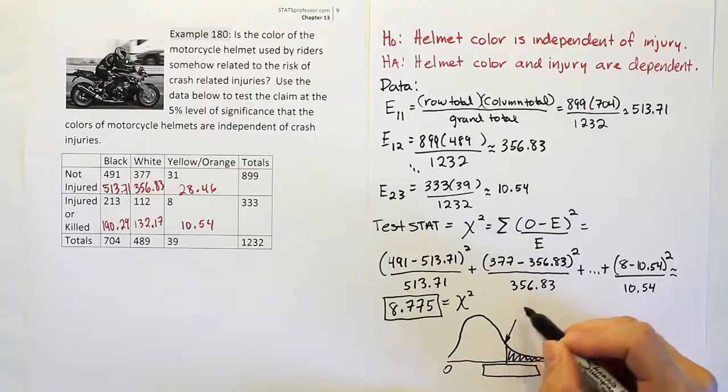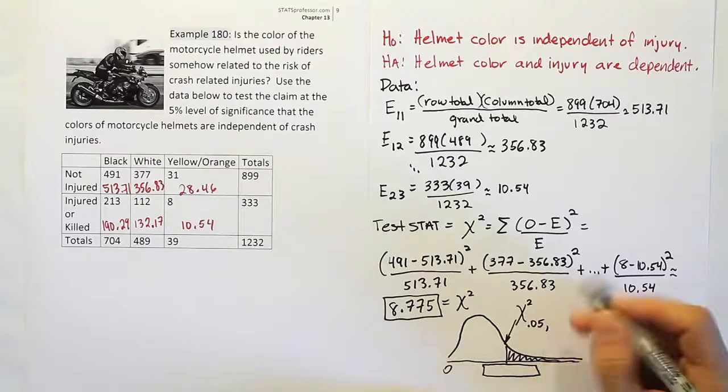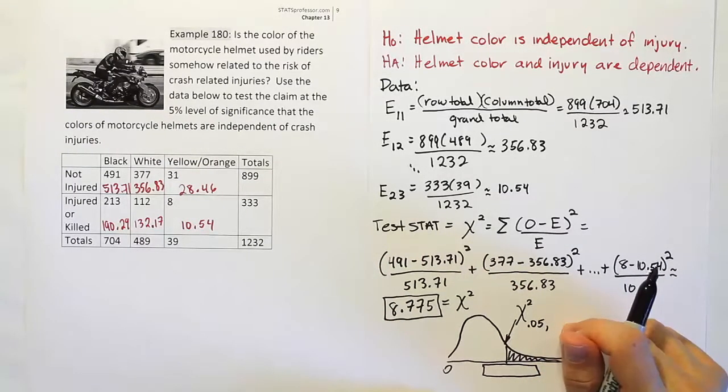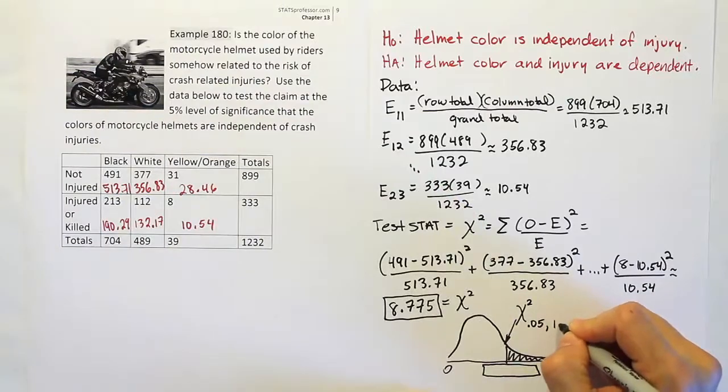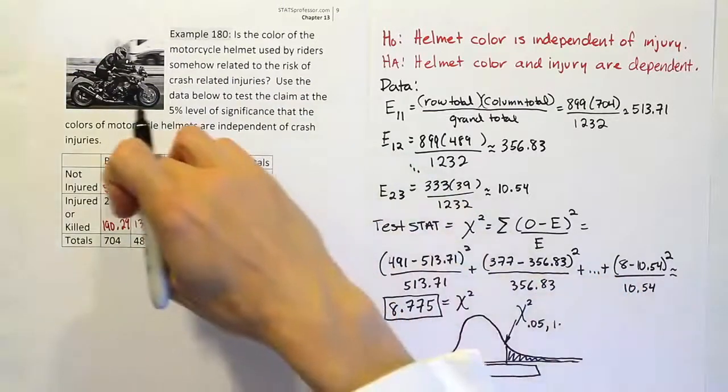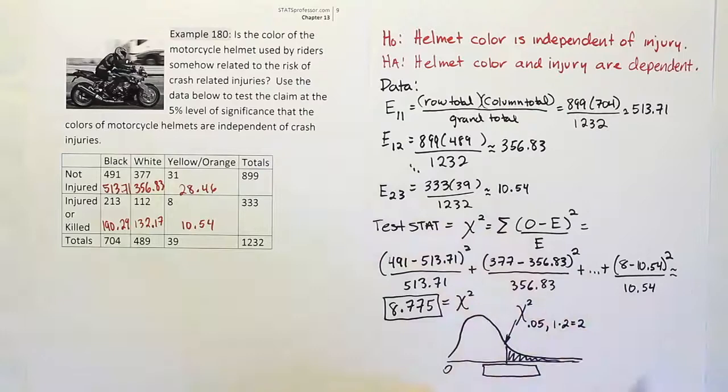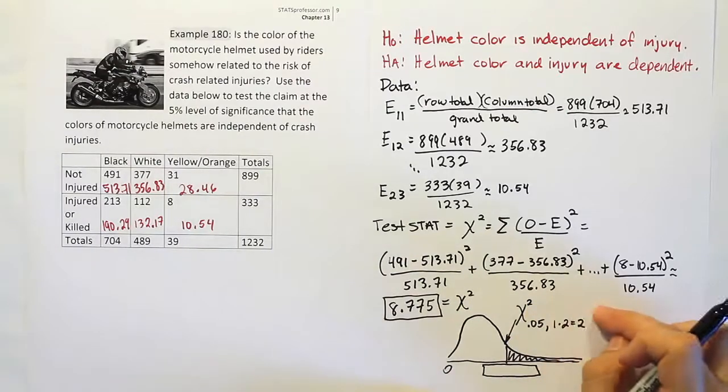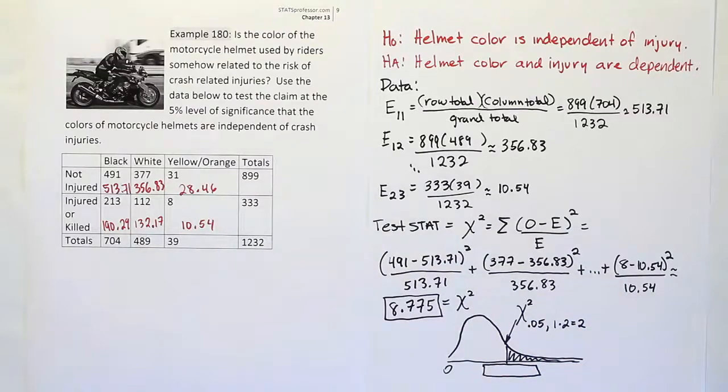To do that critical value, we need the appropriate structure. We need alpha, which is 5% in this problem, so I'll use .05. Then we need the degrees of freedom. The degrees of freedom is very simple. It's the number of rows minus one. There are two rows, take away one gives you one. Times the number of columns minus one. There are three columns, minus one gives you two. That gives you degrees of freedom when you multiply those two values. Our chi-squared critical value is going to be in the .05 column with two degrees of freedom. Let's go to the table and see what that gives us.